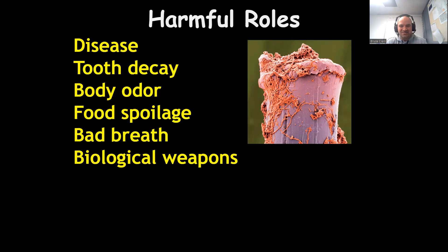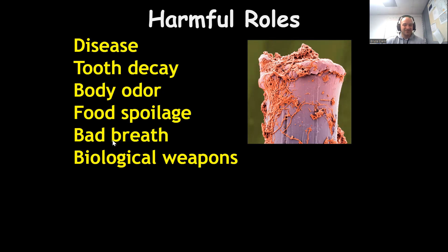That picture on the right is actually bacteria covering a bristle of a toothbrush — so make sure you're taking care of your teeth. Body odor is usually caused by bacteria on your skin. Food spoilage: if you go into your fridge and something's rotten, it's not that the food's gone bad — bacteria have just started eating it first. Bad breath is also usually caused by bacteria living on the back of your tongue, so make sure you're brushing your tongue at night.